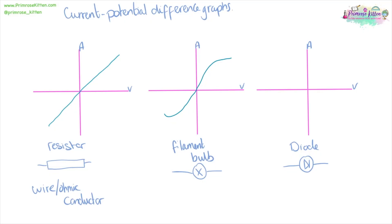And a diode will only let current flow in one direction, so the graph looks like this, the direction that it is pointing.